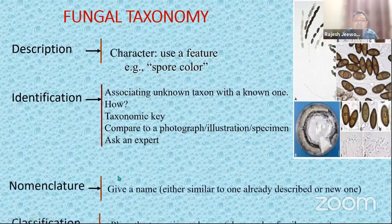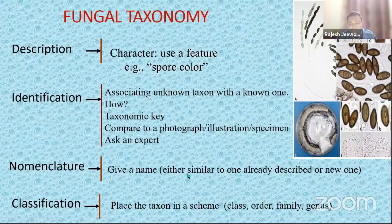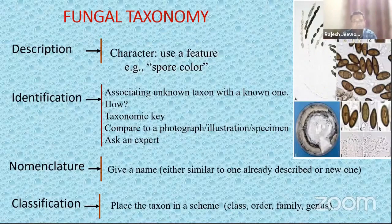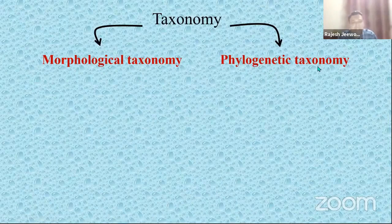Then nomenclature — we try to give it a name, whether it is similar to one already known, or possibly it's a new species and we give it a new name. Then we try to classify that particular fungus — we try to put it in a scheme. Does it belong to a particular genus, family, or order? When we talk about taxonomy, we've got two major branches nowadays: morphological taxonomy and phylogenetic taxonomy.